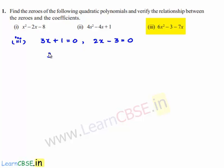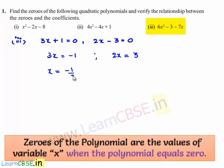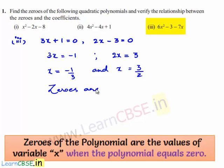Transposing plus 1 to the right-hand side, we get 3x equal to minus 1, and transposing minus 3 to the right-hand side, we get 2x equal to 3. Therefore, x is equal to minus 1/3 and x is equal to 3/2. Therefore, the zeros of the given polynomial are minus 1/3 and 3/2.